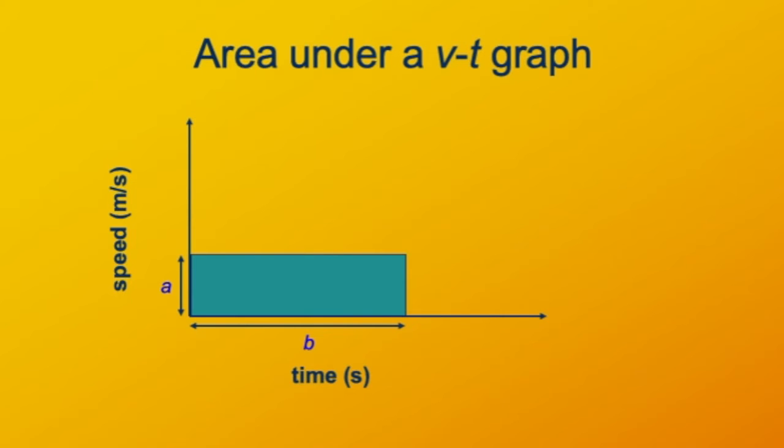Here's a graphical representation of a velocity time plot for constant velocity. It says that if something travels at a meters per second for b seconds, it will travel a times b meters.